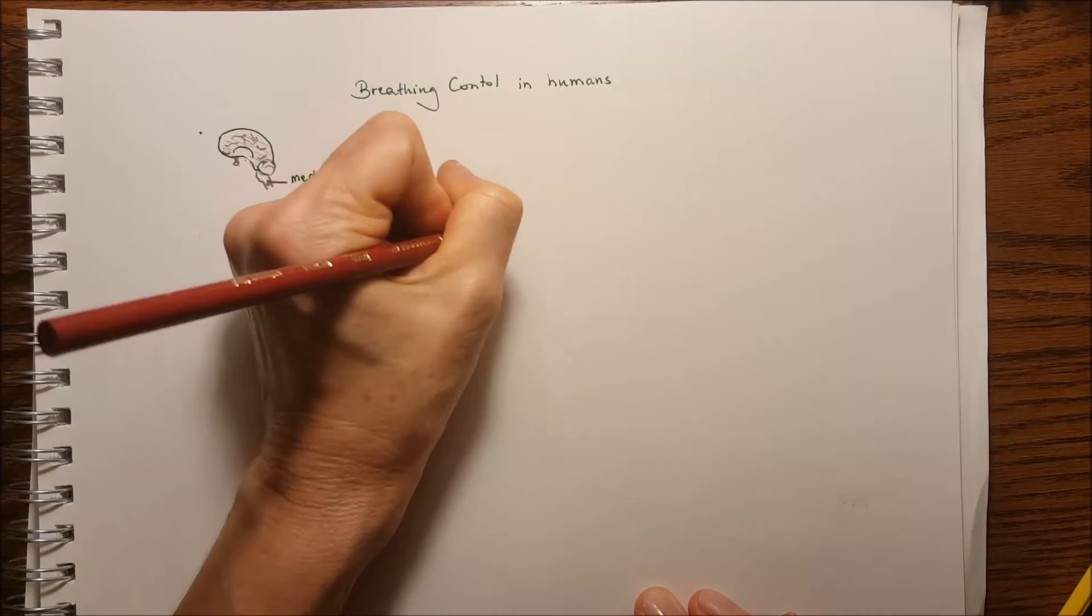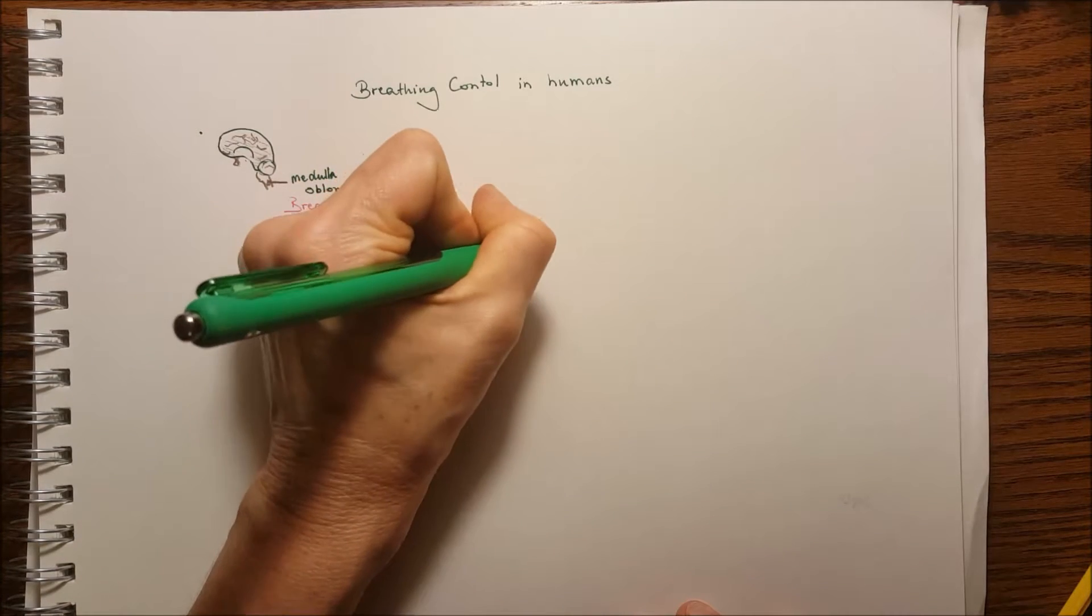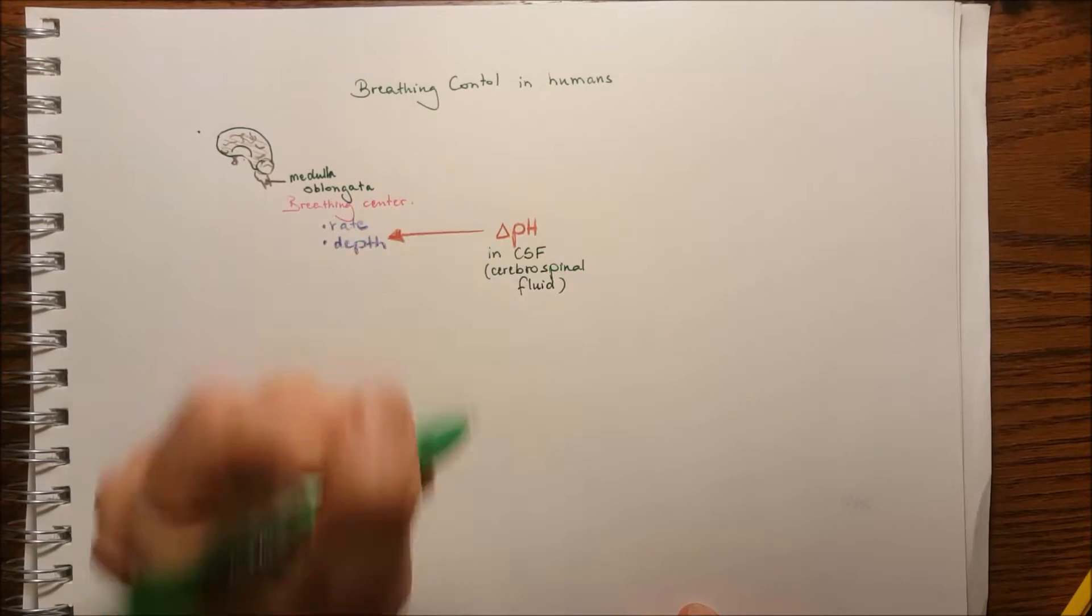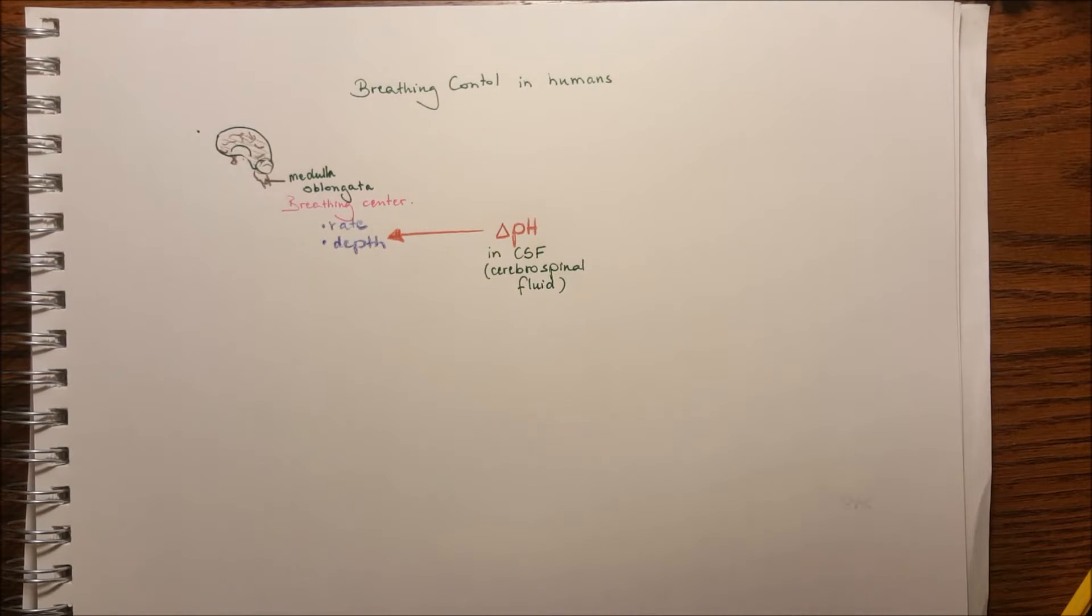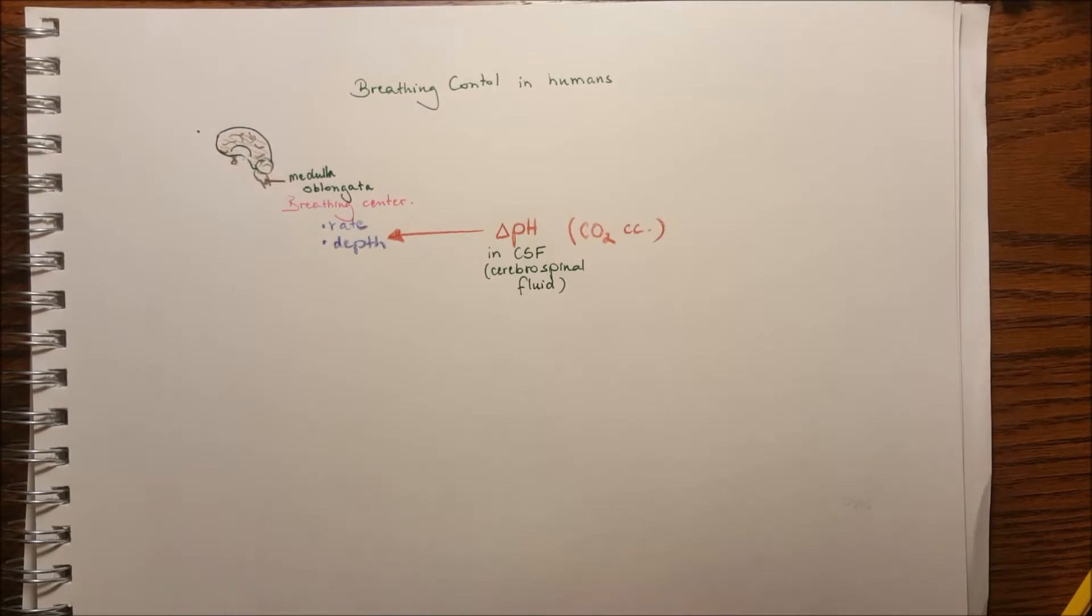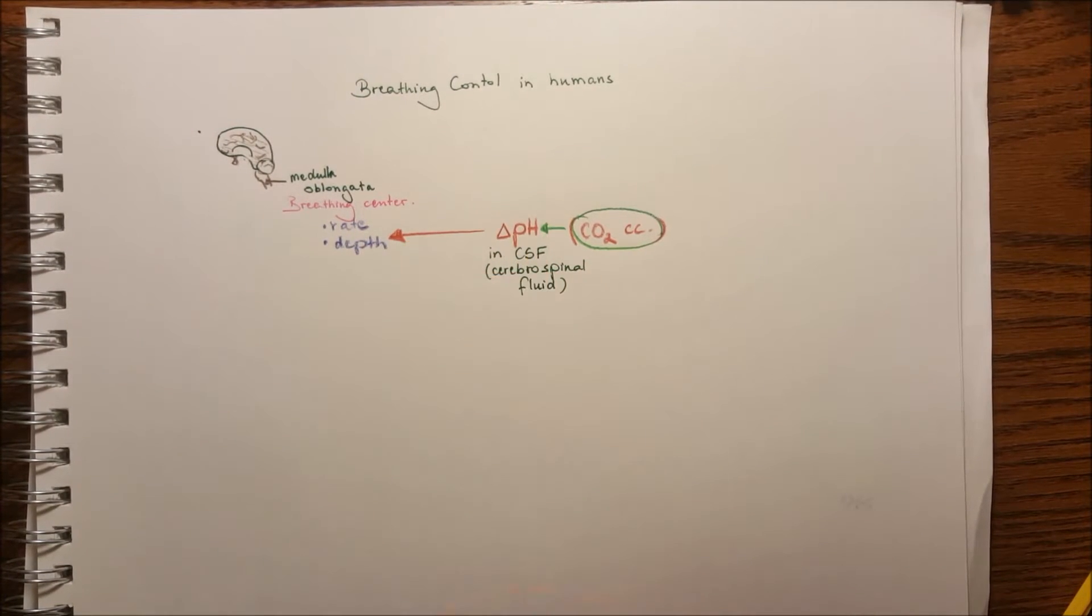pH change first in the blood and later on in the surrounding tissues in the cerebrospinal fluid that surrounds the medulla oblongata. Basically, the CO2 concentration change will change the pH of the tissue, in our case the blood or the cerebrospinal fluid.